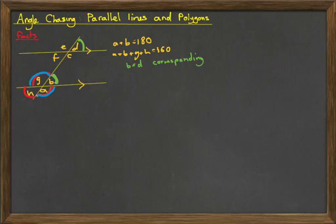A and G. Well, A is equal to G because they are vertically opposite.